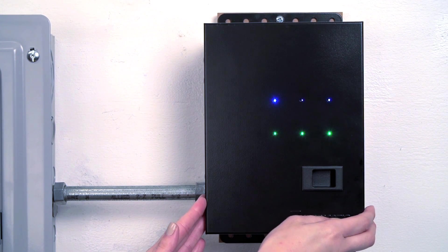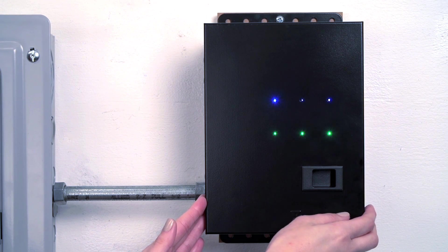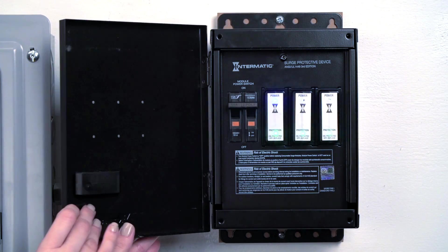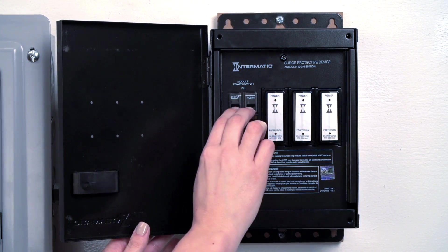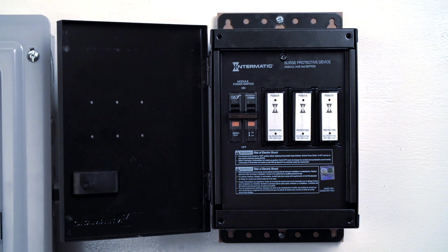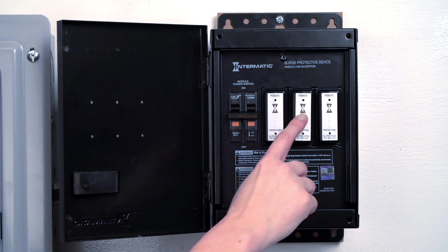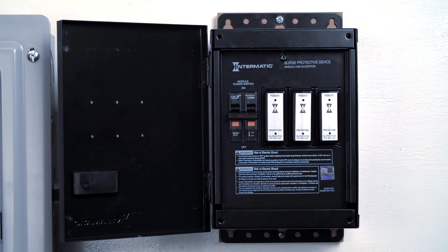This is something the homeowner can do themselves without calling out an electrician. Simply open the door, turn off power with the power module switch. The LED power indicator lights will be out, showing that power is no longer being distributed to the unit.